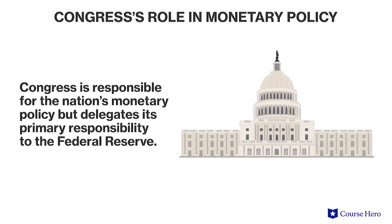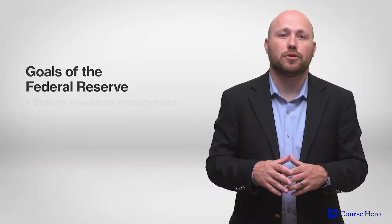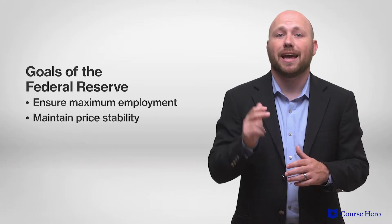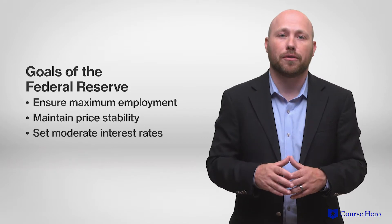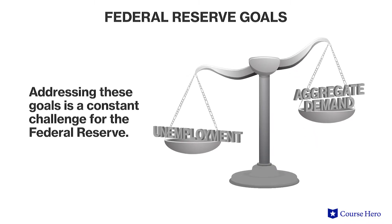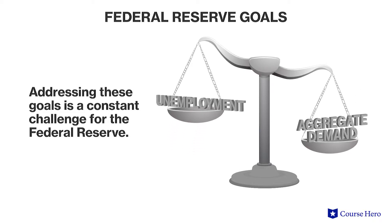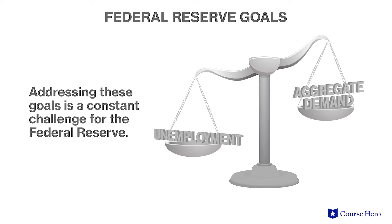In the United States, Congress is responsible for the nation's monetary policy, but delegates the primary responsibility of monetary policy to the Federal Reserve. Three goals of the Federal Reserve are to ensure maximum employment in the United States, to maintain price stability, and to set moderate interest rates for the long run in order to promote economic growth. Addressing these goals is a constant challenge for the Fed in order to prevent both inflation and high unemployment caused by increases and decreases in aggregate demand, respectively.